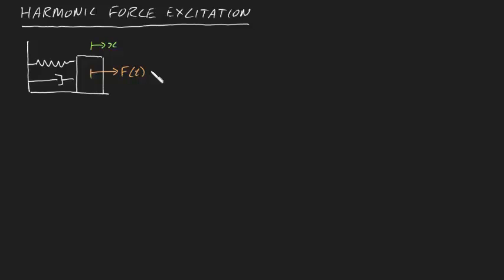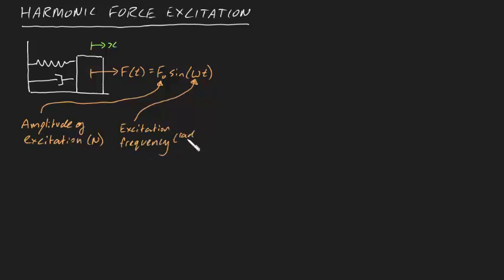In the case where the external force varies sinusoidally, f of t can be written as f0 sin omega t, where f0 is called the amplitude of excitation in newtons, and omega is equal to the excitation frequency in radians per second. By using f equals ma, the equation of motion becomes mx double dot plus cx dot plus kx is equal to f0 sin omega t.